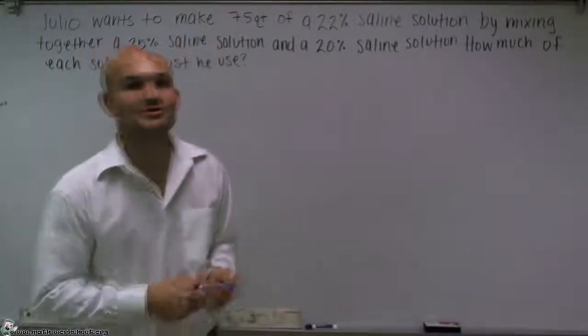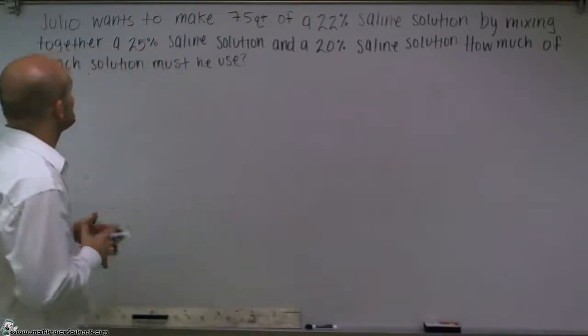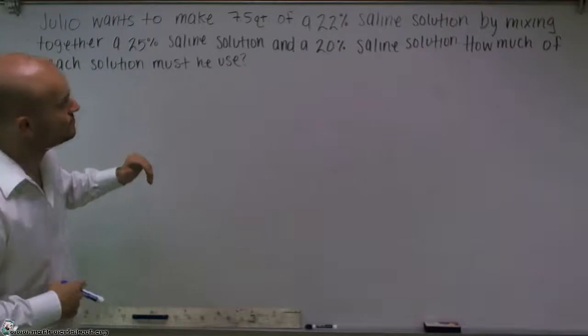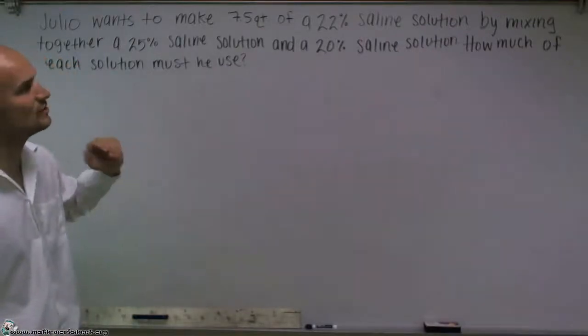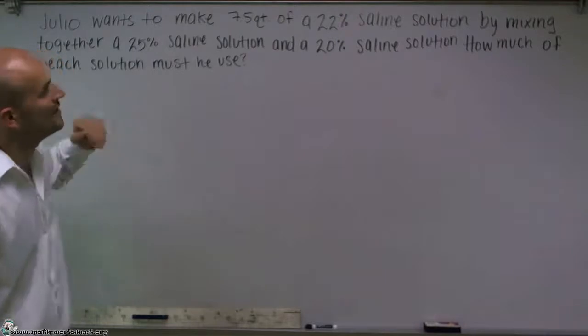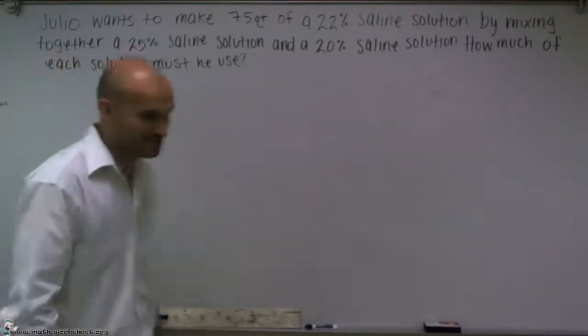OK, welcome. What I'd like to do is show you how to solve this mixture problem. This mixture problem states Julio wants to make 7.5 quarts of a 22% saline solution by mixing together a 25% saline solution and a 20% saline solution. How much of each solution must he use?